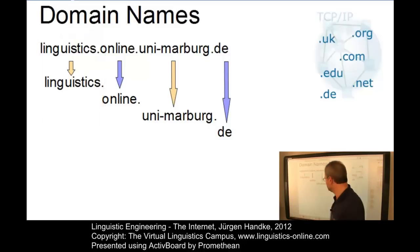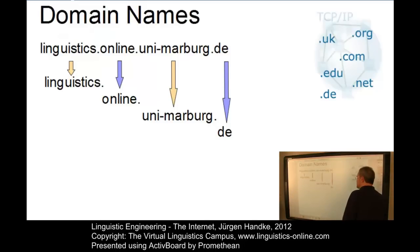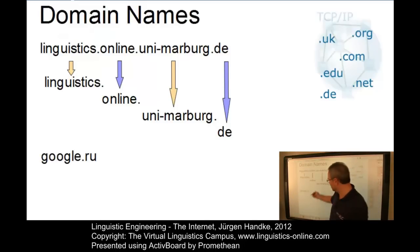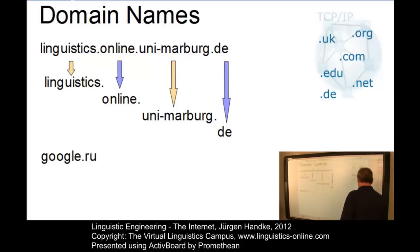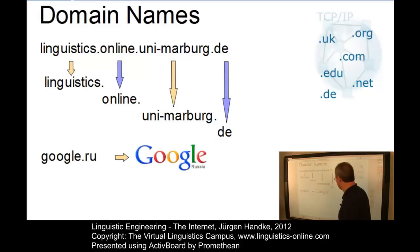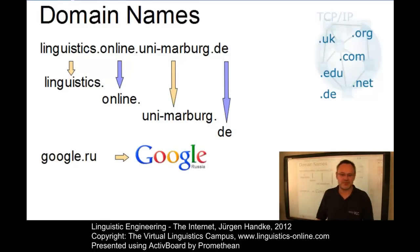Often domain names can be much simpler, like google.ru. They are self-explanatory — this is, of course, the Russian version of Google.